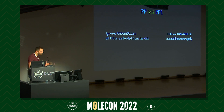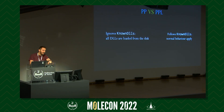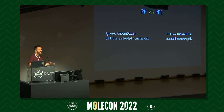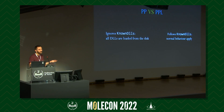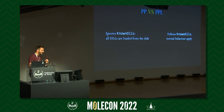The main difference between protected process and protected process light is that protected process ignores known DLLs. Known DLLs is a mechanism that caches commonly used system DLLs for performance, but over time it became a security mechanism preventing trojanized system DLLs from being loaded. Protected process always loads DLLs from disk, completely disregarding known DLLs, while for protected process light the normal known DLL behavior applies.